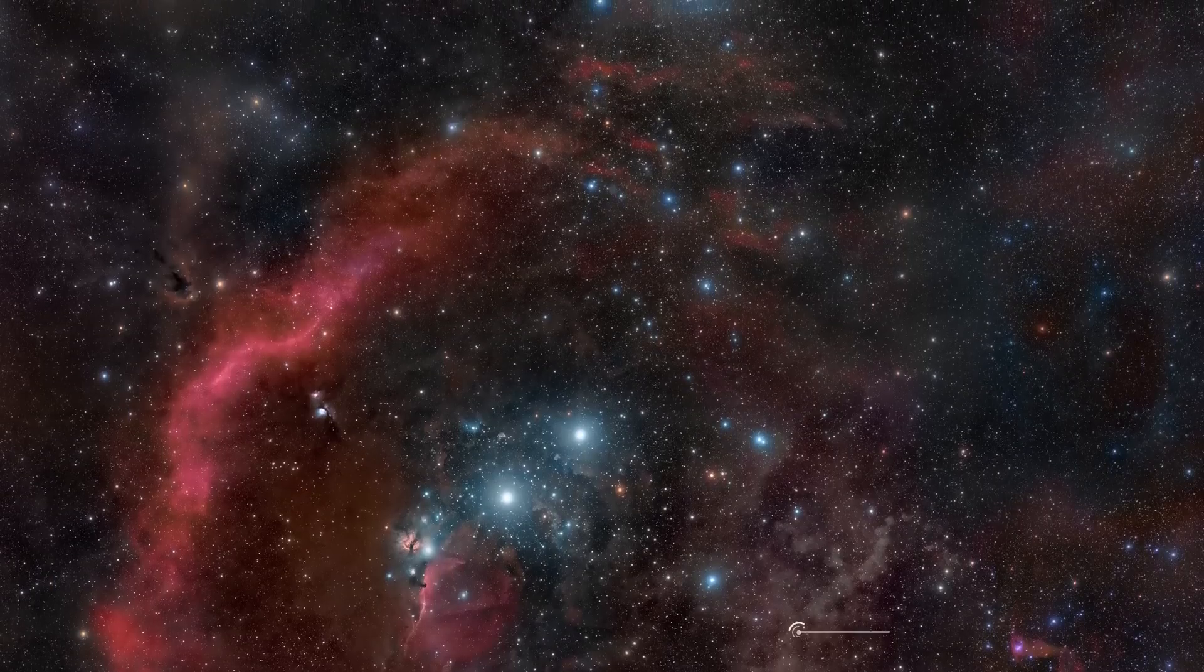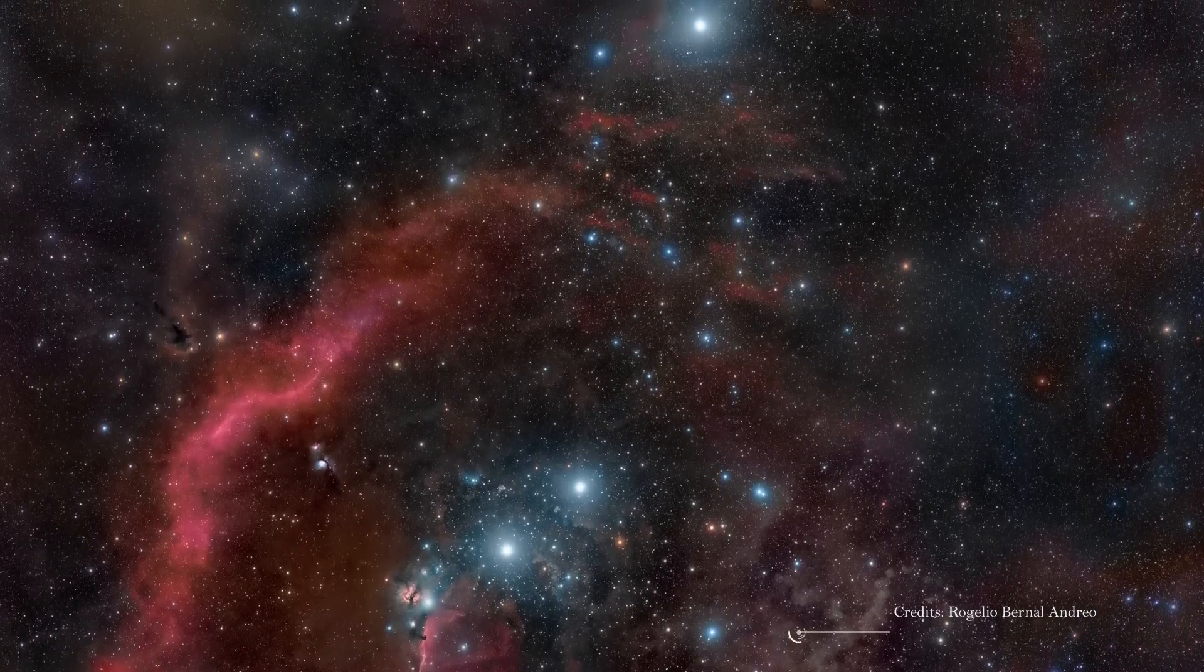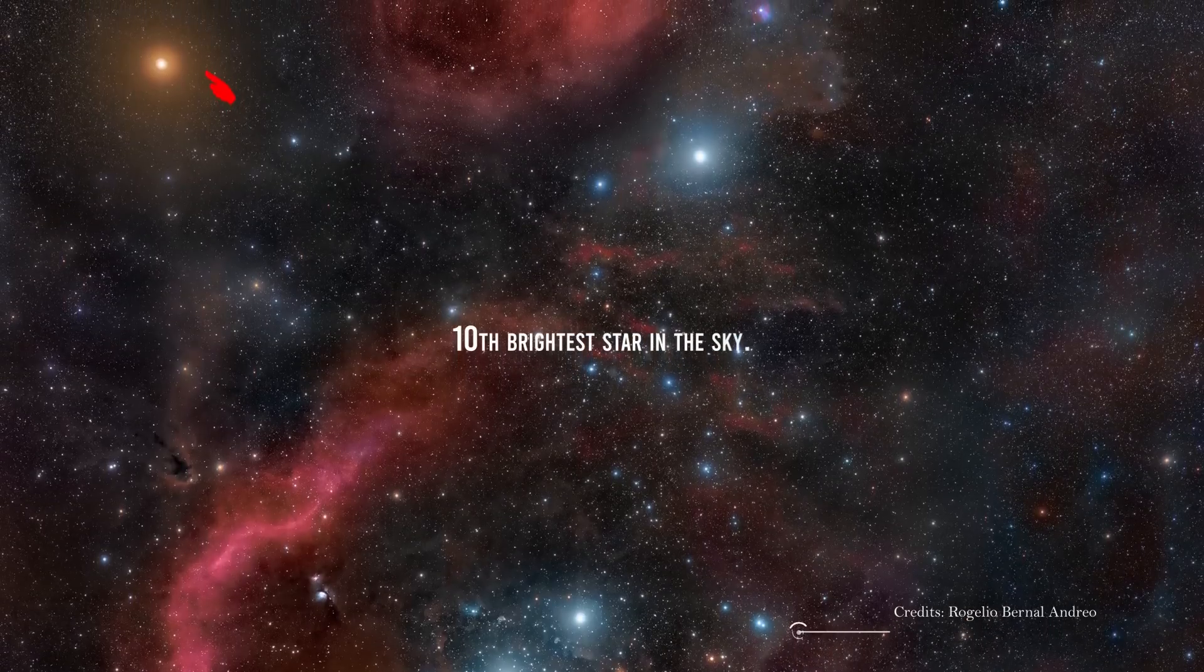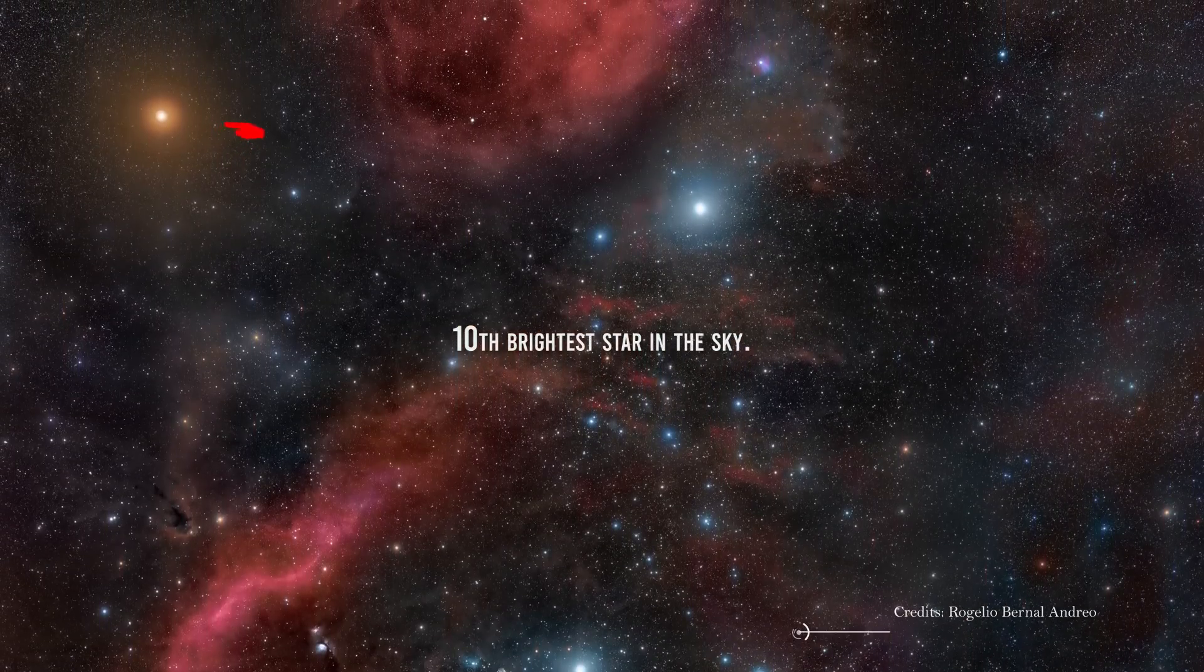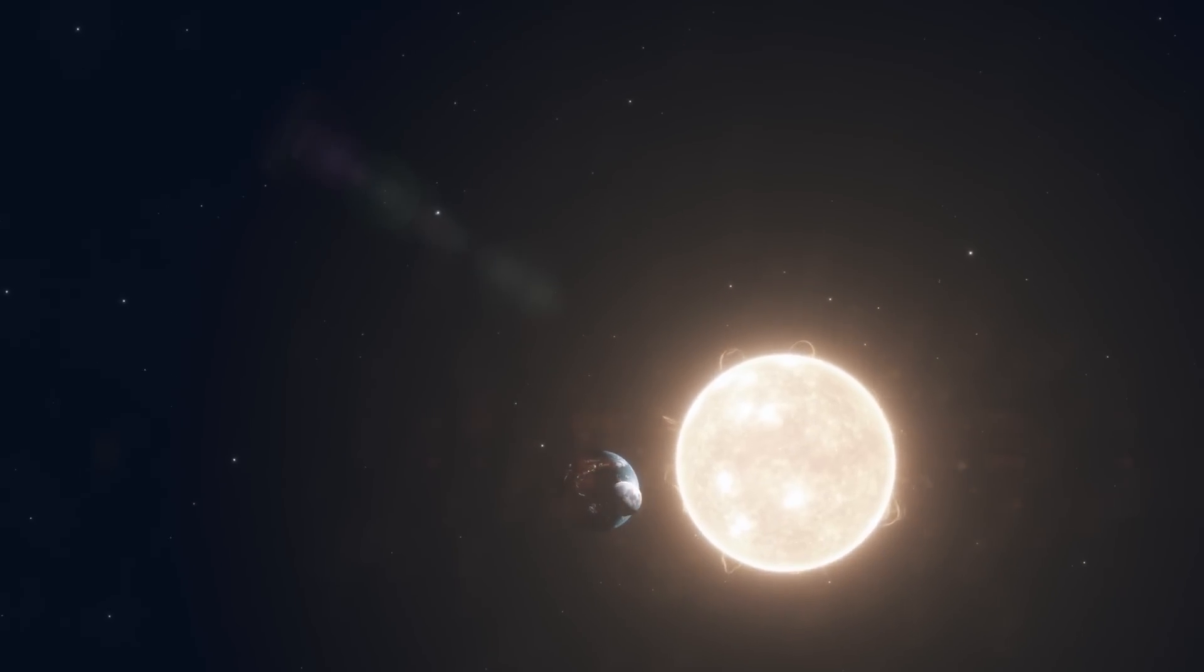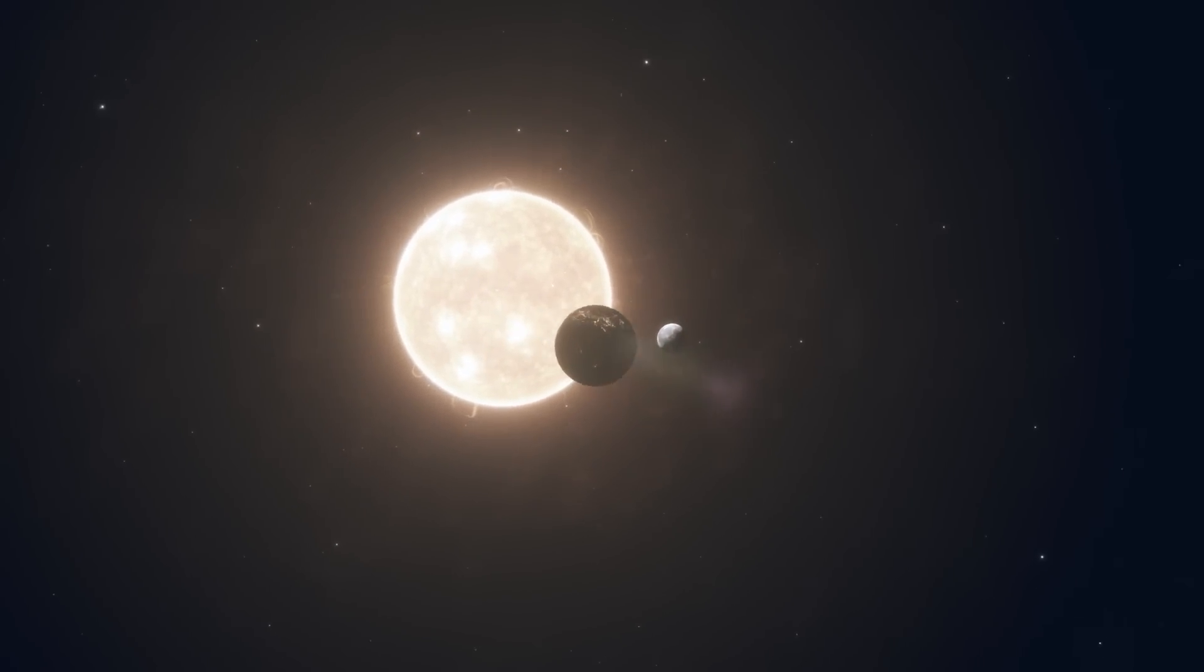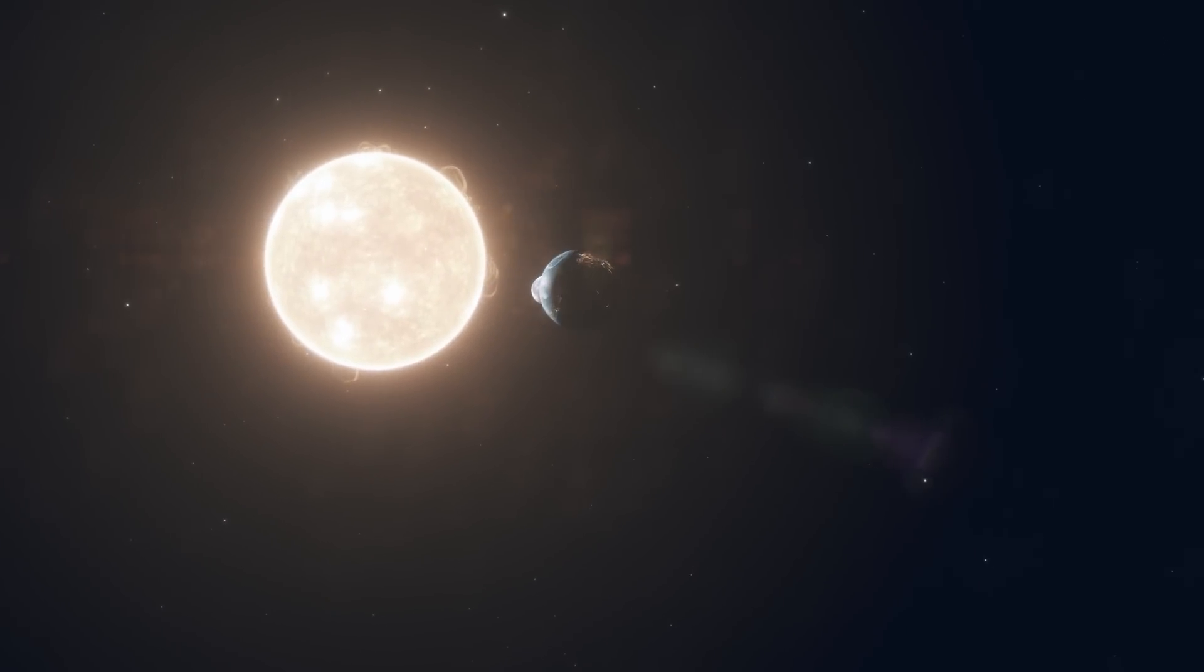Betelgeuse is one of the most readily identified stars in the night sky. It is seen as Orion's blazing red shoulder and is normally the tenth brightest star in the sky. In our solar system, the red supergiant would swallow all of the interior rocky planets and spread from the Sun to the asteroid belt between Mars and Jupiter.